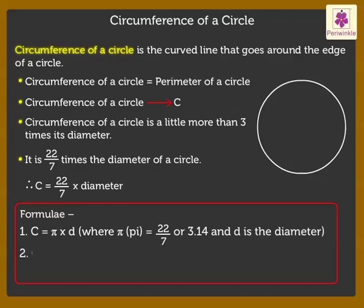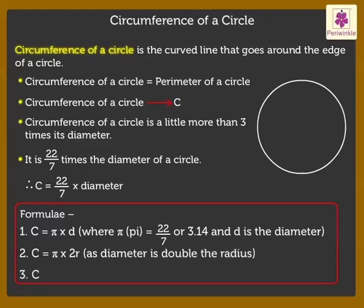2. Circumference of a circle is equal to pi into 2r as diameter is double the radius. Which is same as 2 into pi into r.